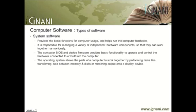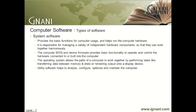The operating system allows the parts of a computer's software to work together by performing tasks like transferring data between memory and disks, or rendering output onto a display device. It also provides a platform to run high-level system software and application software. Utility software helps to analyze, configure, optimize, and maintain the computer.